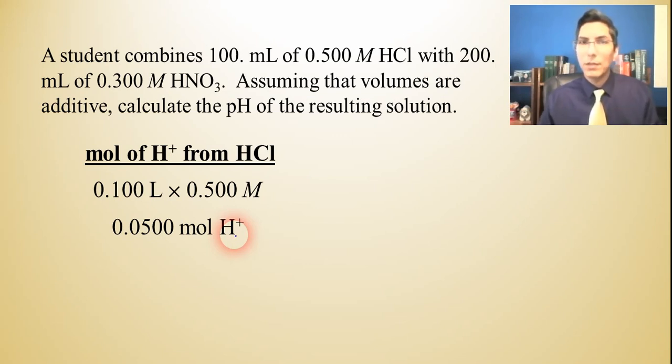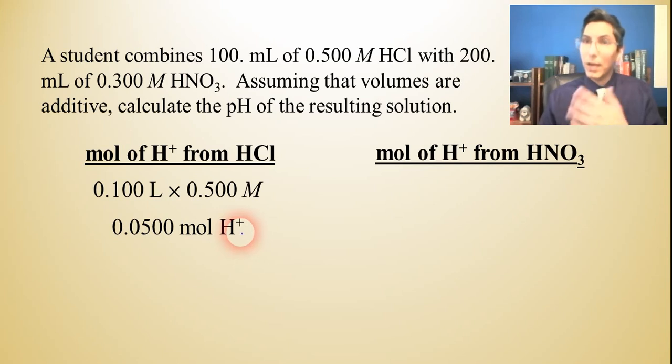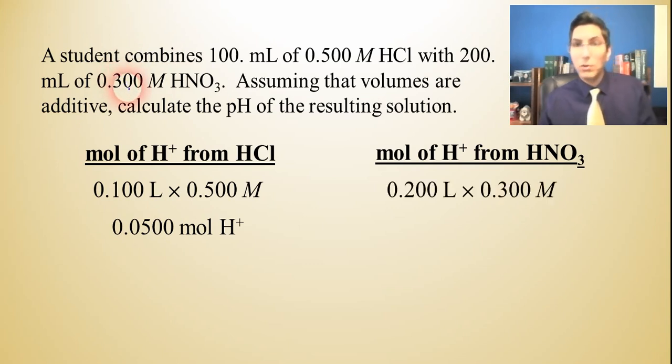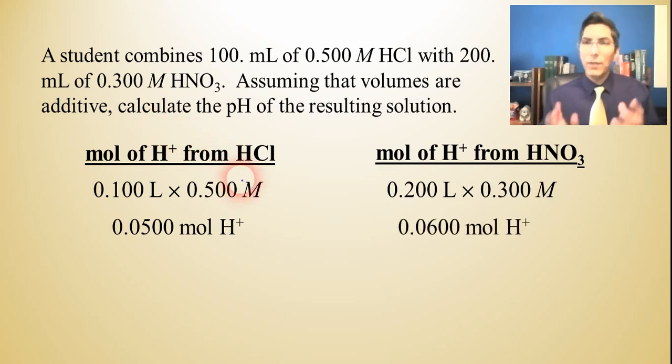Now, how much H+ is coming from the nitric? We've got to do the same thing. This time we have to take 0.2 liters times 0.3 molar. When you do that, you get 0.06 moles of H+. So we have these two amounts of moles of H+.